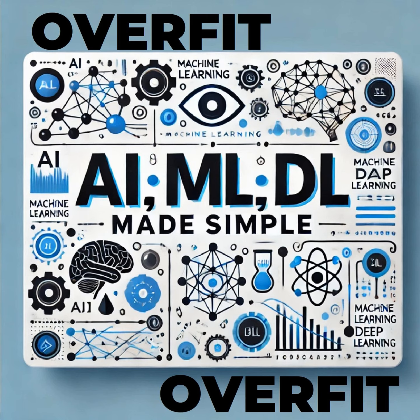That's so clever — it reminds me of those differential amplifiers they use in electronics to remove noise from signals. And the paper actually highlights this improvement visually in figure one, where you can clearly see how the DIFF Transformer is able to zero in on the correct answer, while the traditional model struggles to filter out all that irrelevant information. So it's not just a theory — you can actually see it in action.